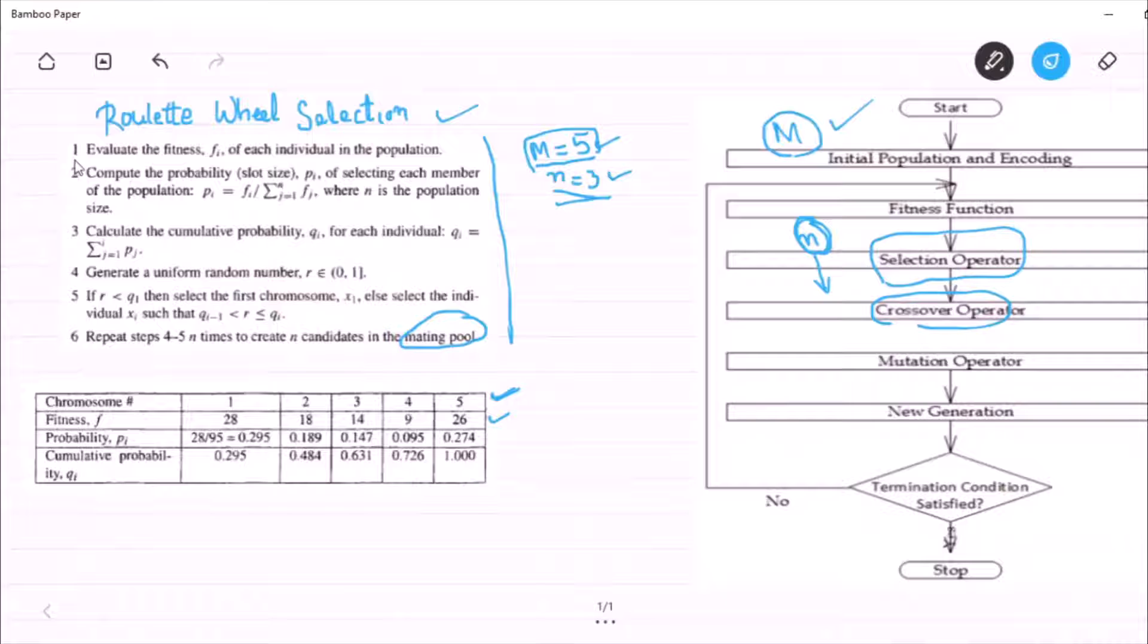So what is step 1? Step 1 says that we have to calculate the fitness value of each individual using the fitness function. So what is the fitness function that is not being discussed here.